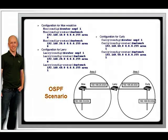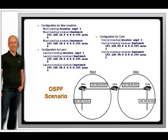This is done with the command router OSPF process ID. The process ID can be any number you prefer between 1 and 65535. Note that this is not the same as the autonomous system number found in IGRP and EIGRP. The process ID is local to the router and does not need to match the other routers.